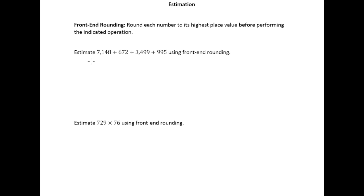So in this first example it says estimate this sum using front-end rounding. Let me start by writing the numbers that we have here using our vertical notation. If I wasn't going to estimate and I was just going to add, this is what it would look like.